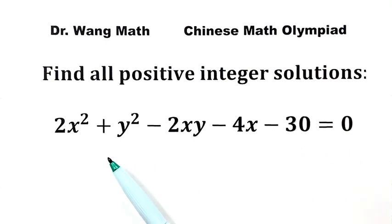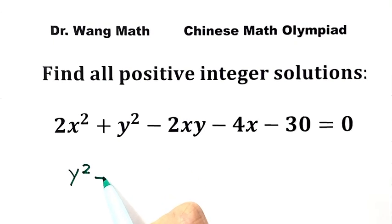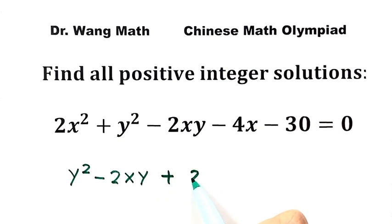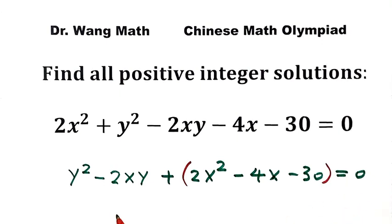Now let's see how to solve one equation for two variables. First, let's reorganize the left-hand side. We're going to write: y² − 2xy + 2x² − 4x − 30 = 0. If we group these three terms together, we can treat this equation as a quadratic equation in y.